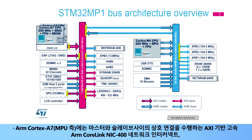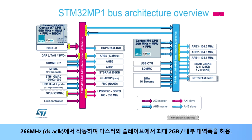One high-speed ARM CoreLink NIC-400 network interconnect, AXI-based, performs interconnection between masters and slaves on the ARM Cortex-A7 side, called the MPU side, operating at 266 MHz (CK_ACLK), and allows an internal bandwidth up to 2 gigabytes per second between each master and slave.